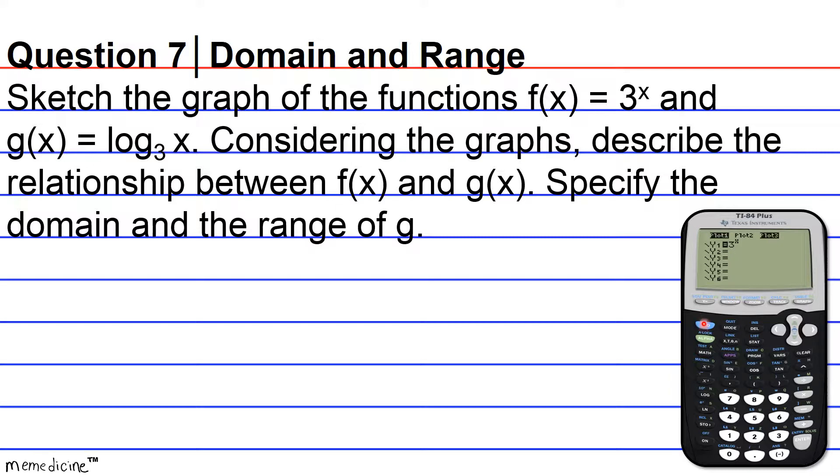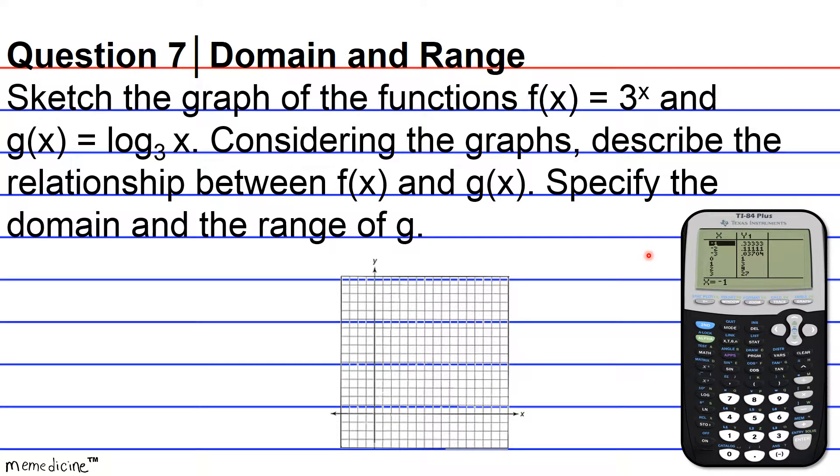Then you're going to hit second graph to bring you to the table screen. And you see a list of values for x and y. And this is actually not in proper numerical order. I'm not really sure what's up here with my calculator. But yeah, you're going to get a table of values. And so basically you can use these values to sketch your graph.